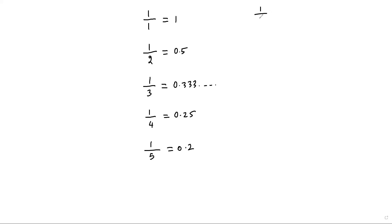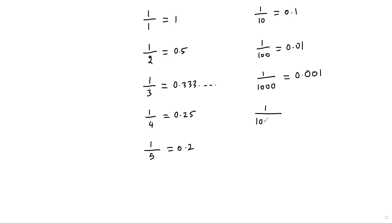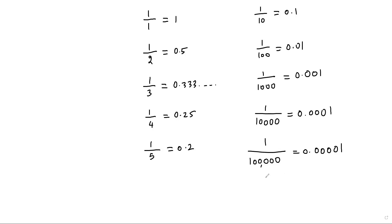I divide the number one by ten — I get zero point one. I divide one by one hundred — I get zero point zero one. When I divide one by ten thousand, it results zero point zero zero zero zero zero zero zero zero zero one. When I divide one by one million, it results zero point zero zero zero zero zero zero zero one.